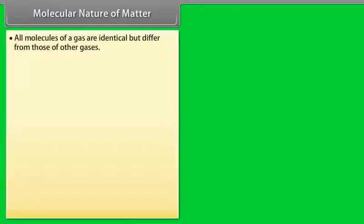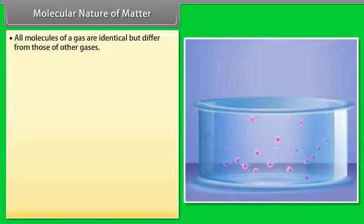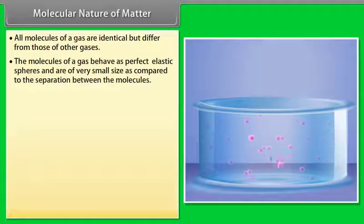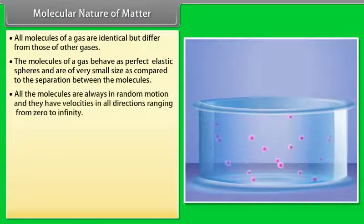All molecules of a gas are identical but differ from those of other gases. The molecules of a gas behave as perfect elastic spheres and are of very small size as compared to the separation between the molecules. All the molecules are always in random motion and they have velocities in all directions ranging from zero to infinity.